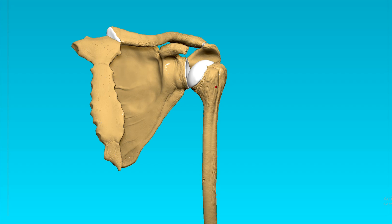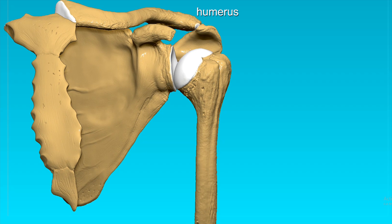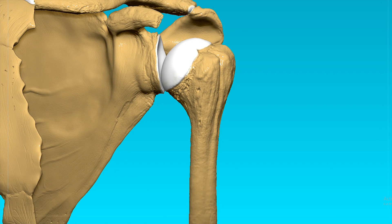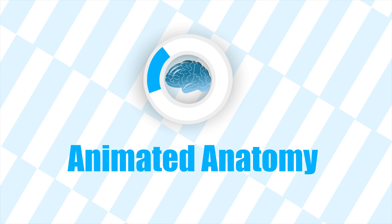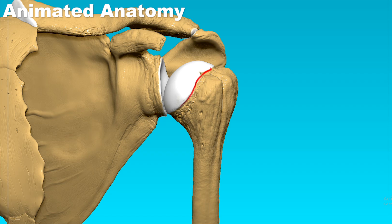Here we see the humerus — the third bone we're going to talk about. This here is the articular surface for the scapula. It articulates with the glenoid cavity, creating the glenohumeral joint.